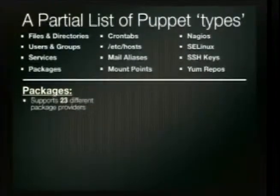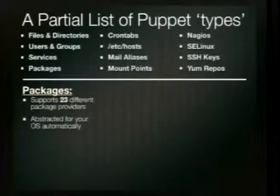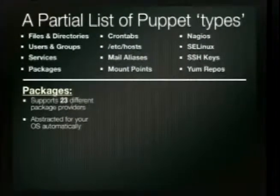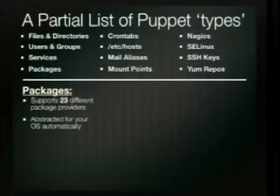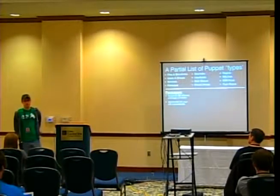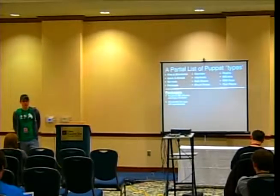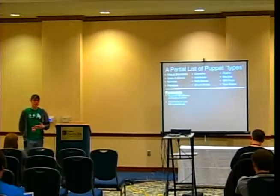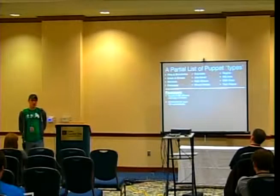With Puppet's Nagios type, you'll automatically never forget a host you're supposed to be monitoring. Package providers include RPM, YUM, APT, and on macOS DMG files — really anything you can think of across all supported platforms. The abstraction is key: when you write a module, you don't have to write separate versions for Solaris, Linux, and macOS. If you say 'install Apache,' Puppet knows whether it should use YUM or APT based on what system it's running on.